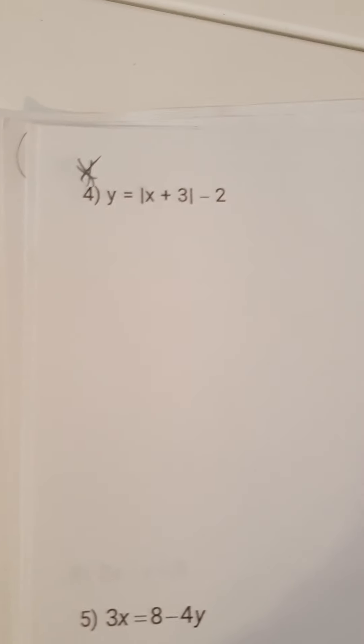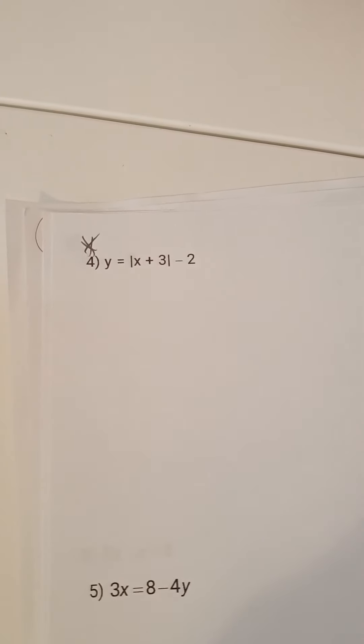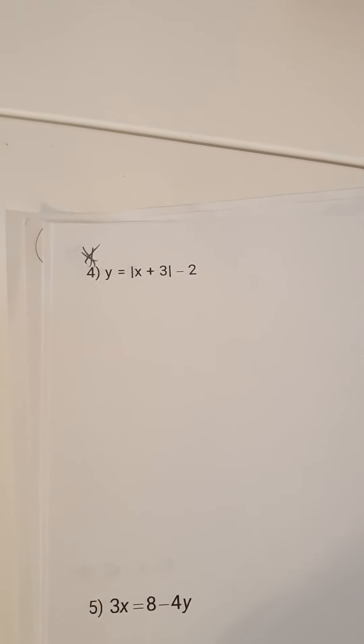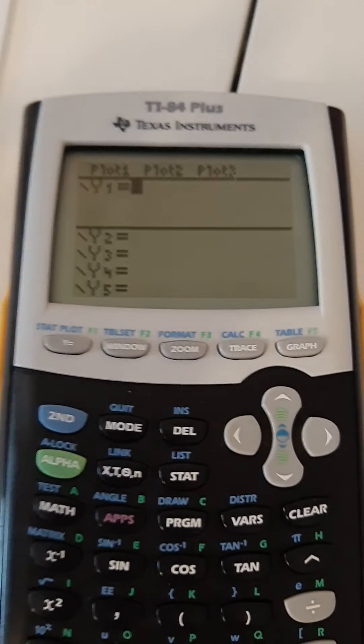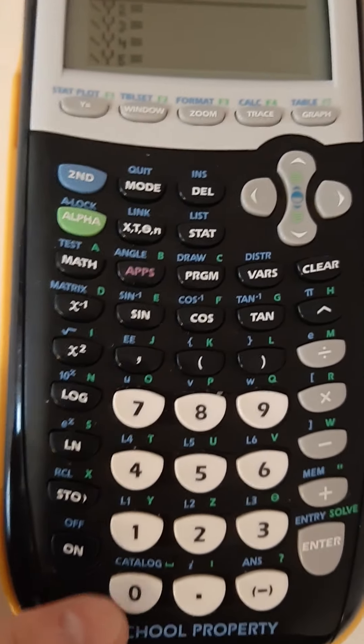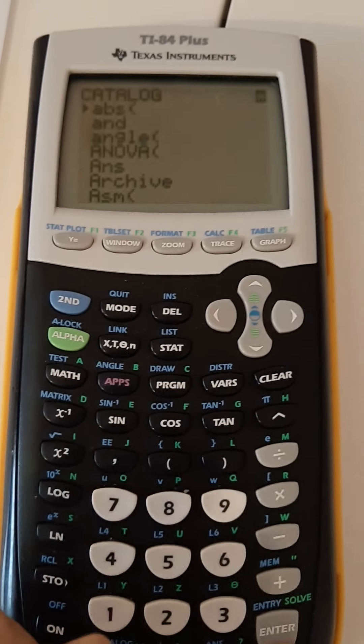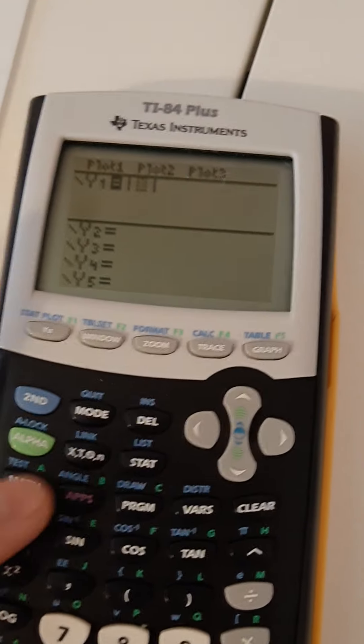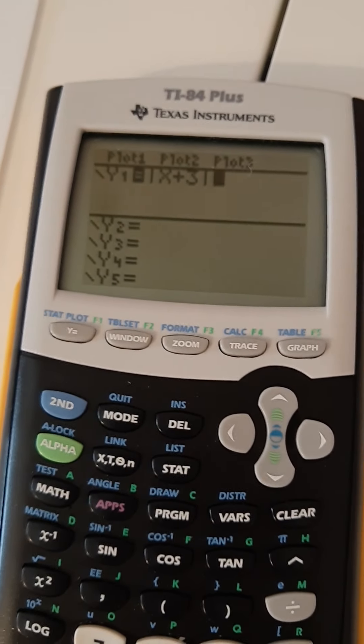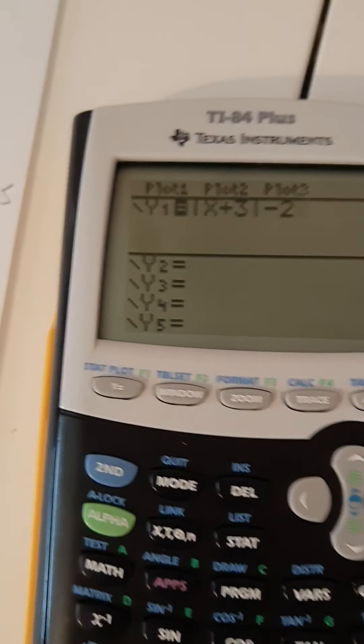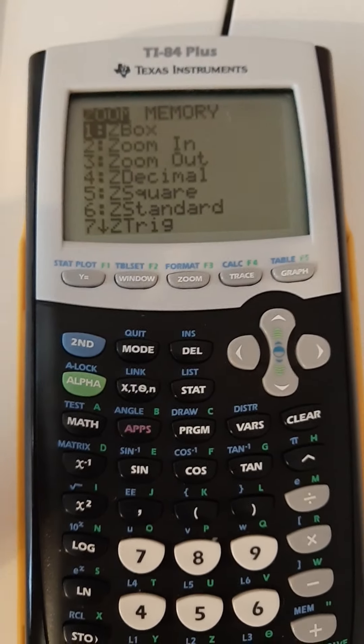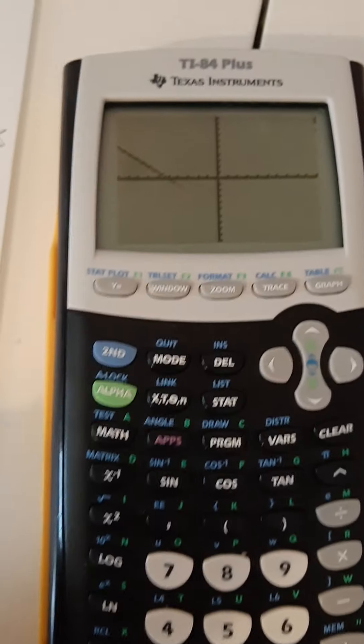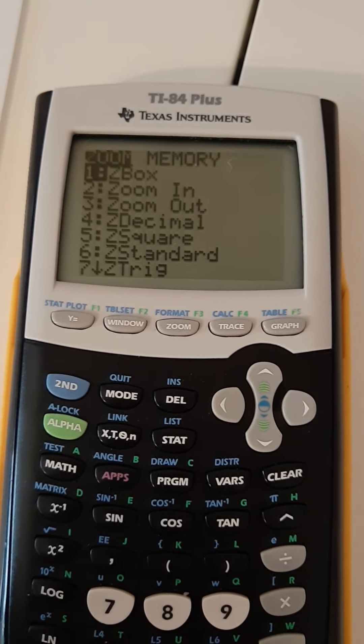So the next one after this question is going to be number 4, which is absolute value. The absolute value of x plus 3 subtract 2. So go to y equals. Clear it out. I like hitting second and then zero. And then abs is your choice. And you're going to type in x plus 3. Hit the right arrow to get out of there and subtract 2. And then you go to your t-chart. Or let's look at it because it's just so pretty. Hit the zoom button and then choice 6.